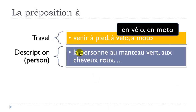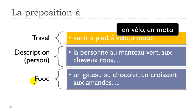To describe a person, you use à: la personne au manteau vert — the person wearing the green jacket. Au is à+le. Or la personne aux cheveux roux — the person with red hair. It's also commonly used for food: un gâteau au chocolat (chocolate cake), or un croissant aux amandes (almond croissant). Gâteau is cake, chocolat is chocolate, and amandes are almonds.